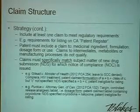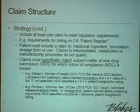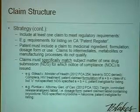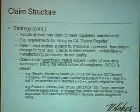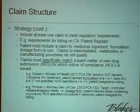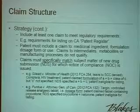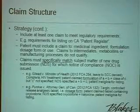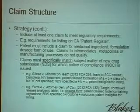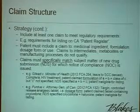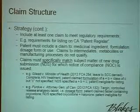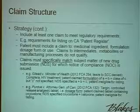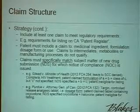You have to ensure that your patent is granted with at least one claim that allows the patent to be included on a patent register, as we say in Canada, or an orange book, as they say in the U.S. According to the Canadian regulations, the claim has to be directed to the medicinal ingredient, a formulation contained in the ingredient, a dosage form of the ingredient, or its use. Intermediates, metabolites, etc. — those kinds of claims are not able to be registered.